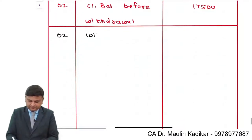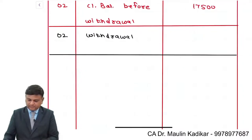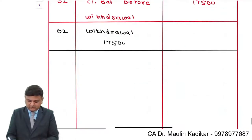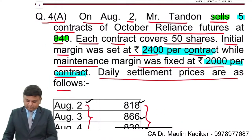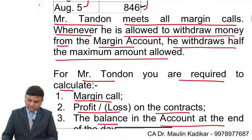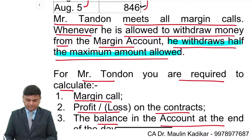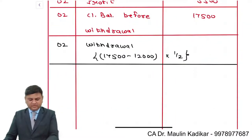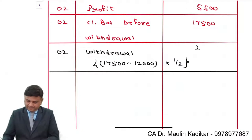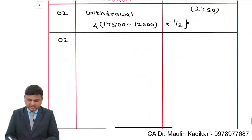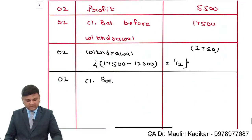On August 2, the withdrawal amount is: (17,500 minus 12,000) into 1/2, which is 5,500 into 1/2, that comes to 2,750. So the closing balance on August 2 is 17,500 minus 2,750, which equals 14,750.